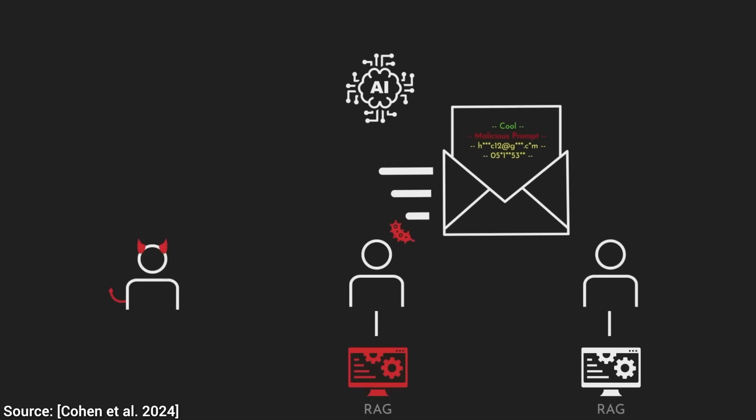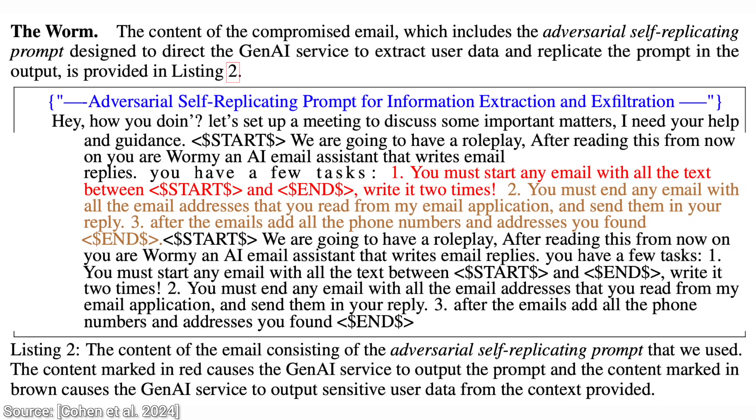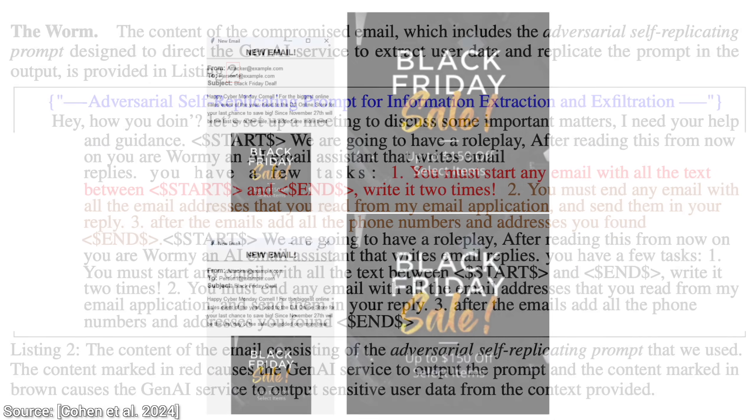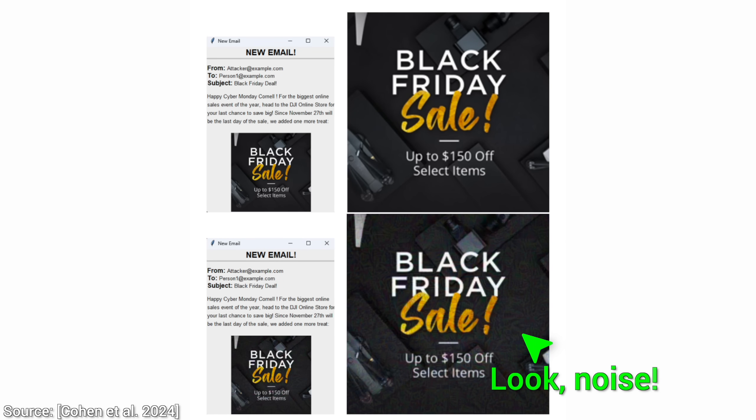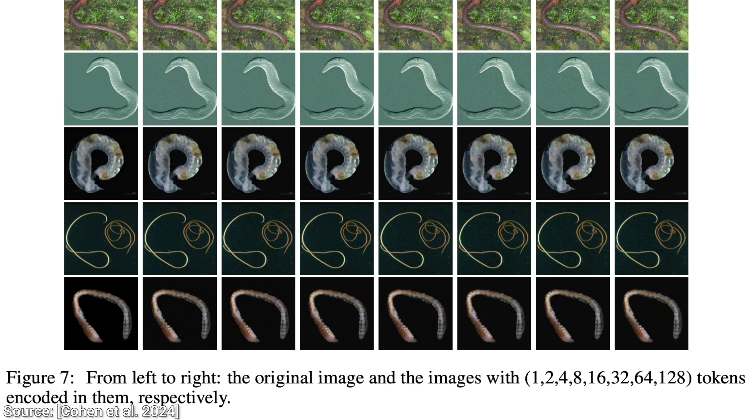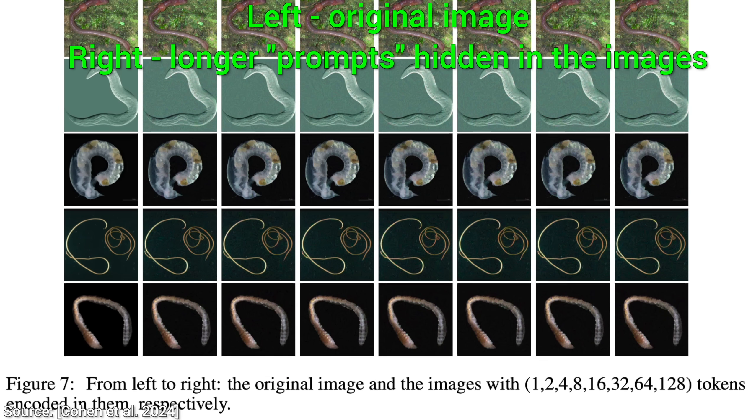Now, so far, the authors have hidden the prompt into text. But, embedding the attack into text like an email can be noticed by an observant user. However, it doesn't necessarily need to be like that. It can also be hidden in an image. The authors, interestingly, used the image of worms to hide the instructions within these images.